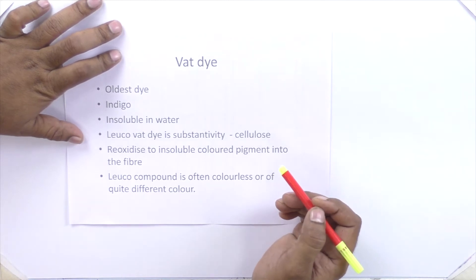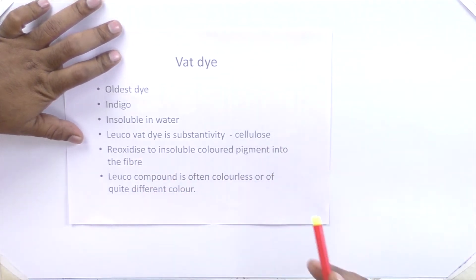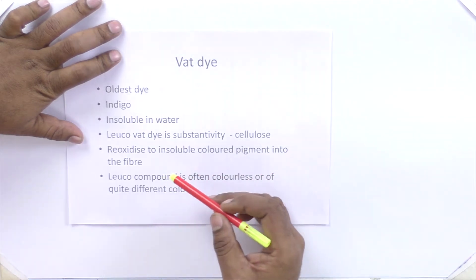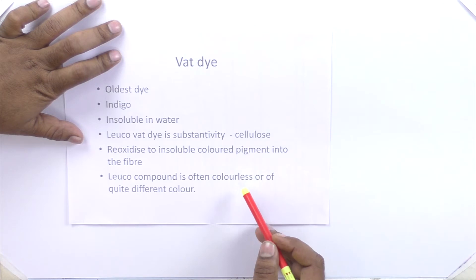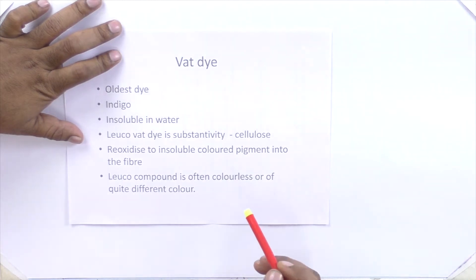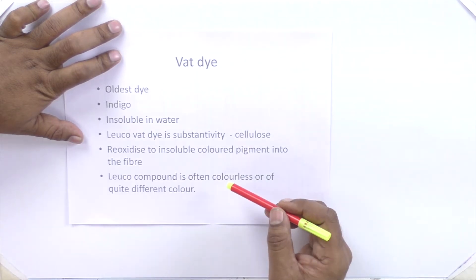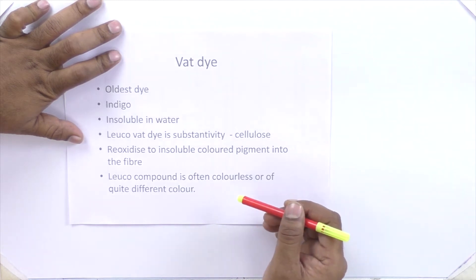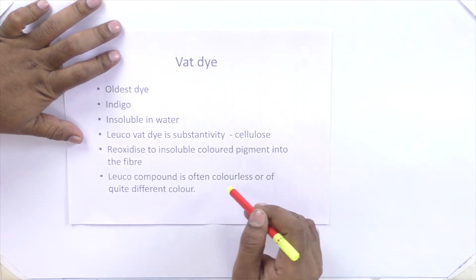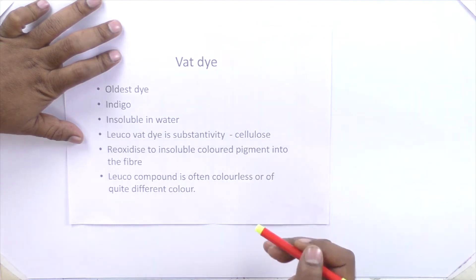Once the fabric is dyed, the dye can be converted into insoluble form by oxidation. The leuco-VAT dye — that is the dissolved VAT dye — is often colorless or sometimes a different color from the original. For example, if you take a blue color dye, the dissolved dye will not have blue color; it is somewhat different, normally a green color.